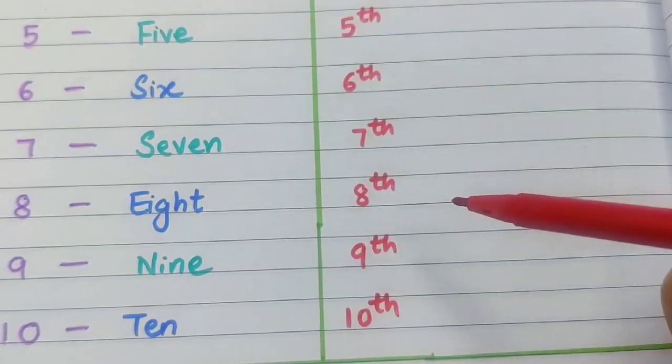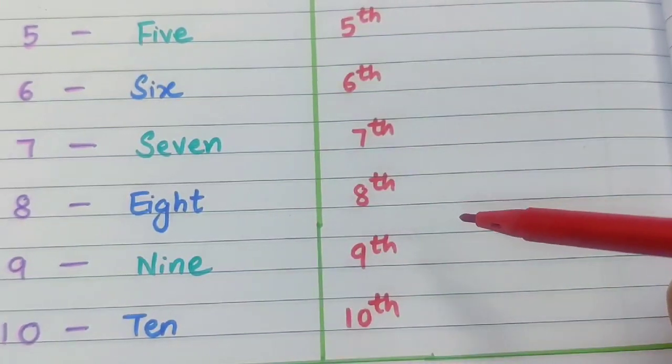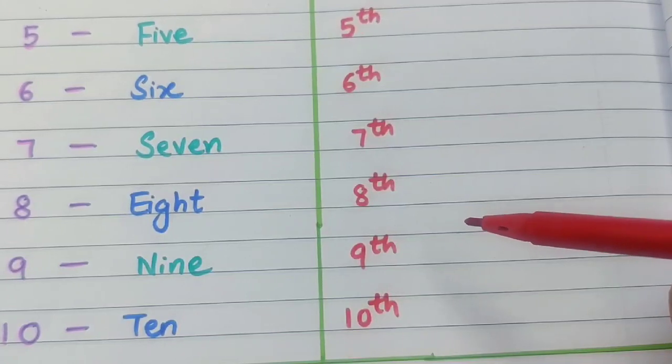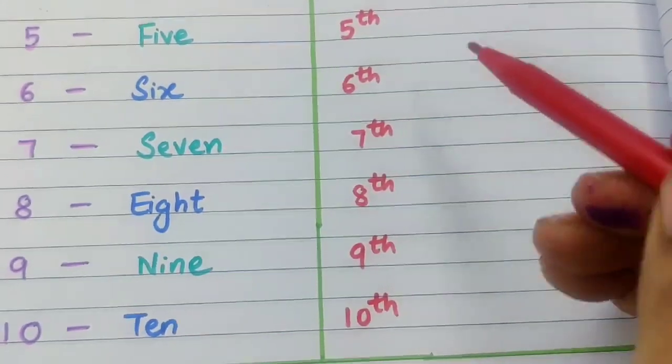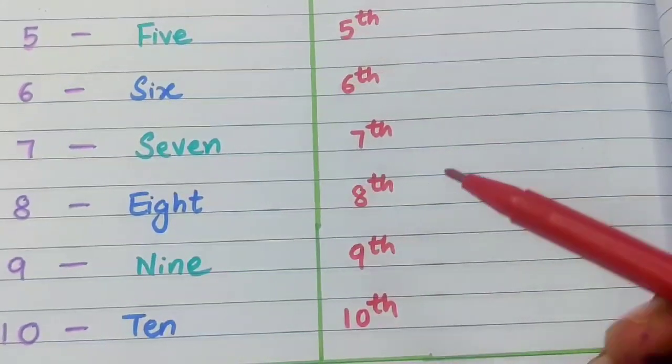All these ordinal numbers represent the position of something, children. Now let us see the spellings of them.